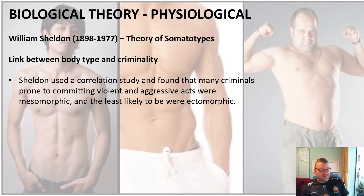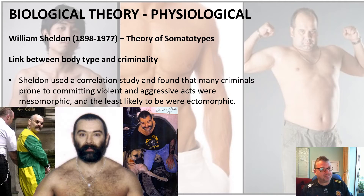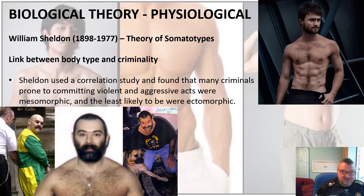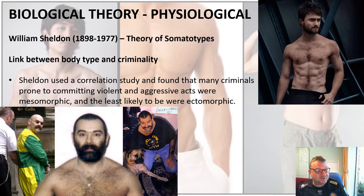Criminals are more likely to be mesomorphic and least likely to be ectomorphic. So mesomorphic is your criminal shape and ectomorphic is your least criminal shape. Here we see a classic mesomorph — Charles Bronson, one of the most dangerous criminals in the UK — who would conform to Sheldon's mesomorphic view. Daniel Radcliffe, by contrast, is still an ectomorph: thin and not very broad, and therefore unlikely to be criminal according to Sheldon.